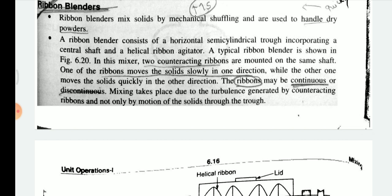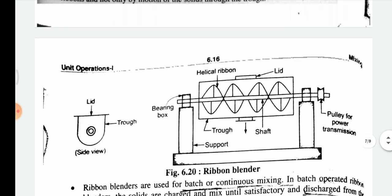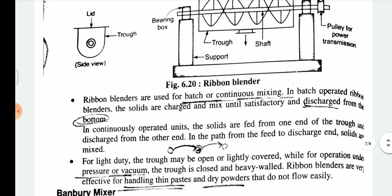One ribbon moves the solid quickly in one direction, while the other moves the solid quickly in the other direction. The ribbons may be continuous or discontinuous. Mixing takes place due to the turbulence generated by the counter-acting ribbons and the motion of the solid through the equipment.